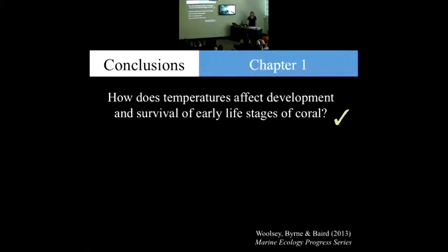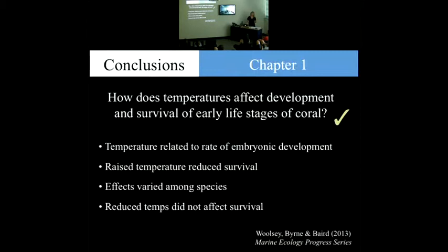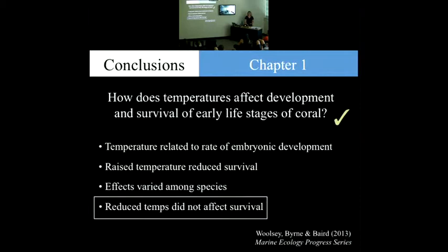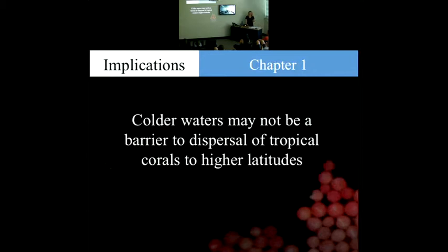For chapter one, we can say that temperature does influence the rate of larval development. Raised temperatures reduce survival, although the effects varied among species. A novel finding of this chapter is that reduced temperatures did not affect survival, at least down to four degrees below ambient. This may mean that colder waters aren't a dispersal barrier to higher latitude reefs.